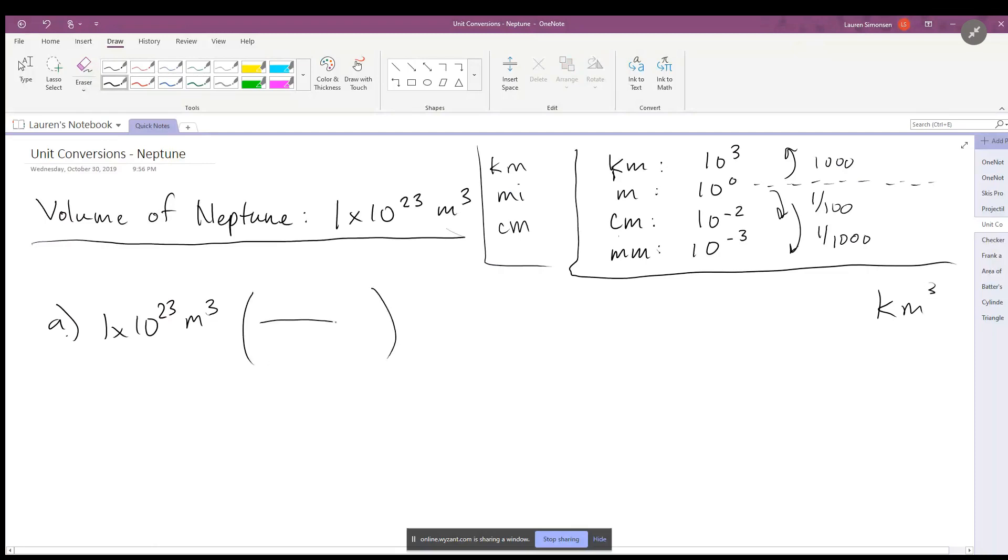So this is your traditional factor label problem. So we have meters here on the bottom and we want to get to kilometers here on the top. Looking at our little table here, we know that there are 1,000 meters in one kilometer.